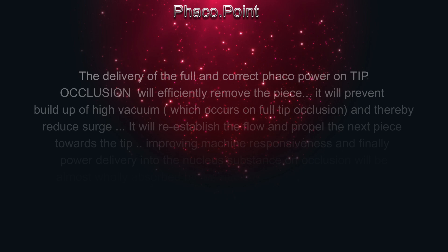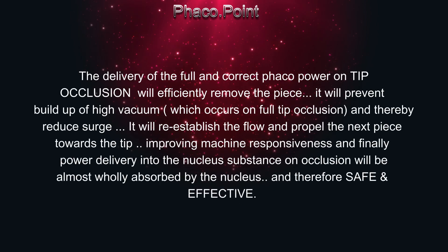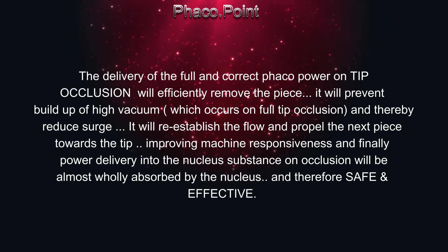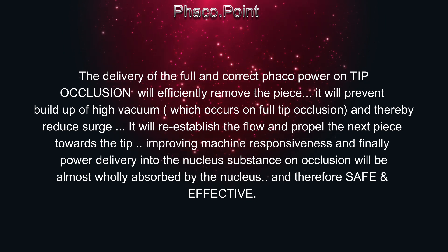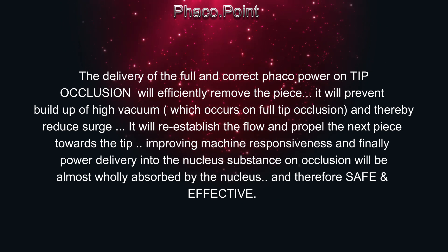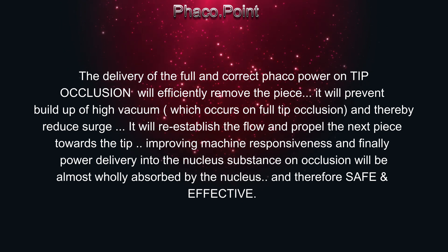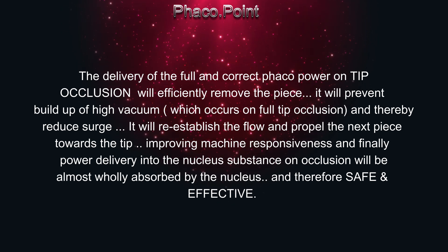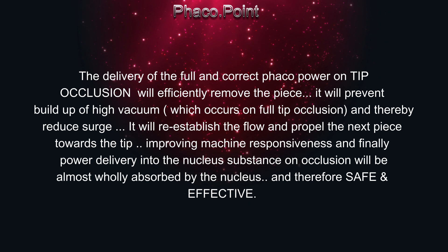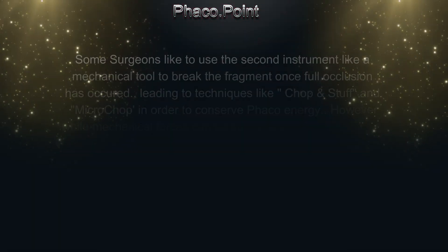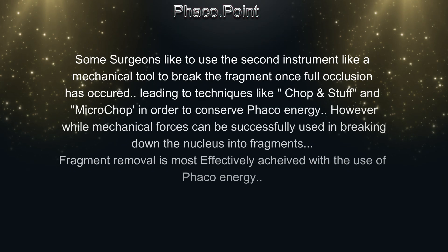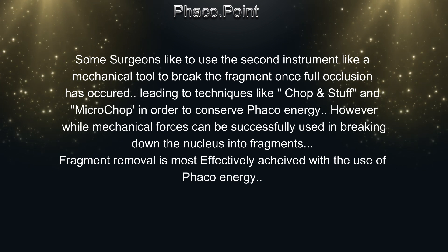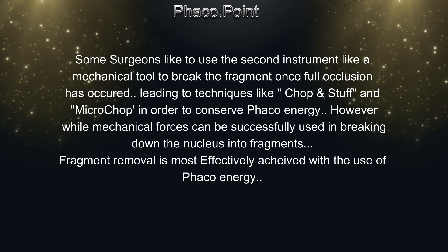The delivery of the full and correct FACO power on tip occlusion will efficiently remove the piece. It will prevent the buildup of high vacuum which occurs on full tip occlusion and thereby reduce surge. It will re-establish the flow and propel the next piece towards the tip, improving machine responsiveness. Finally, power delivery into the nucleus substance on occlusion will almost wholly be absorbed by the nucleus and therefore it is safe and definitely effective. Some surgeons like to use the second instrument as a mechanical tool to break the fragment once full occlusion has occurred, leading to techniques like chop and stuff and microchop in order to conserve FACO energy.